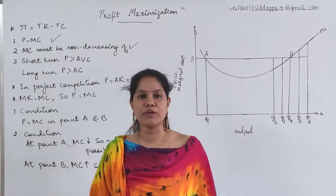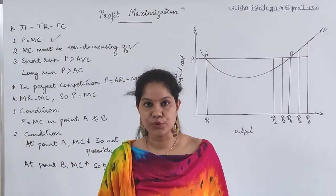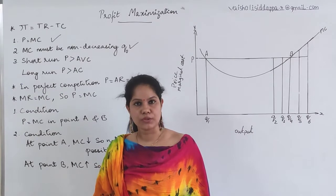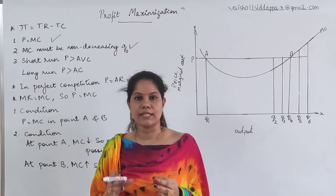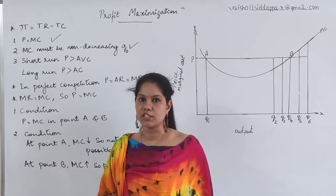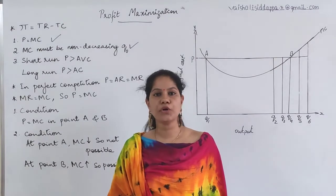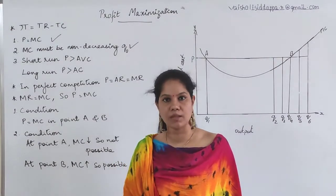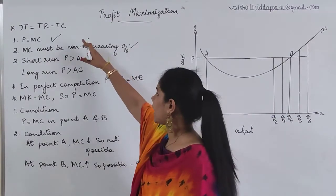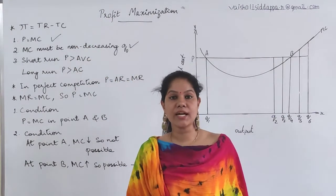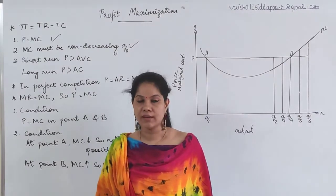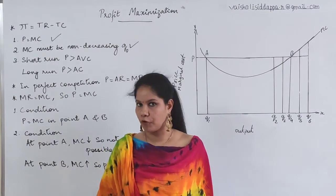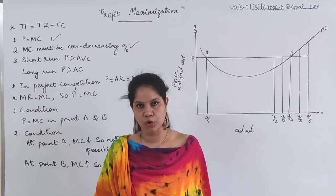Any firm that is going to produce and involve themselves in the production process will think about their objective, which is definitely profit. So how are they going to gain profit and capture profit-making in the business? To reach that, they have to fulfill three conditions, and only then will there be a chance of getting more profit — profit maximization is possible.